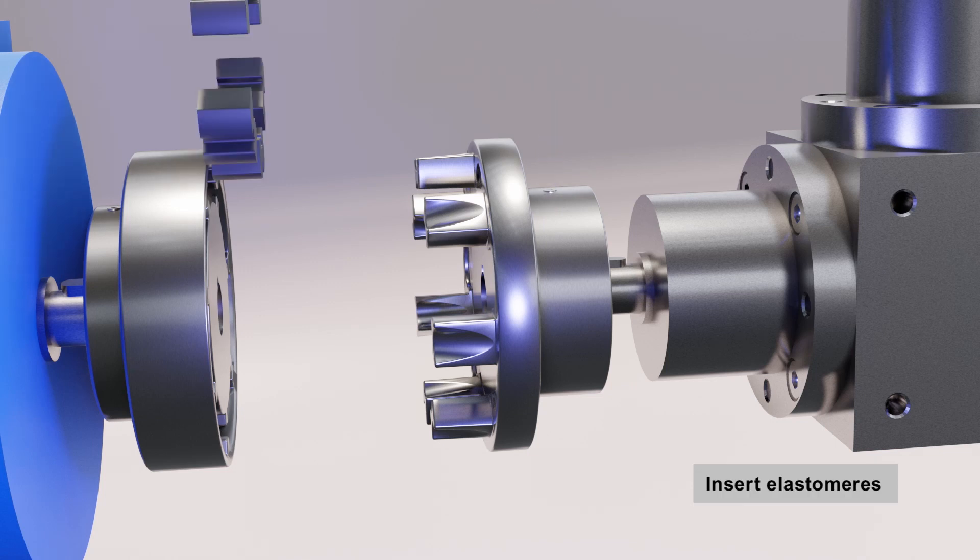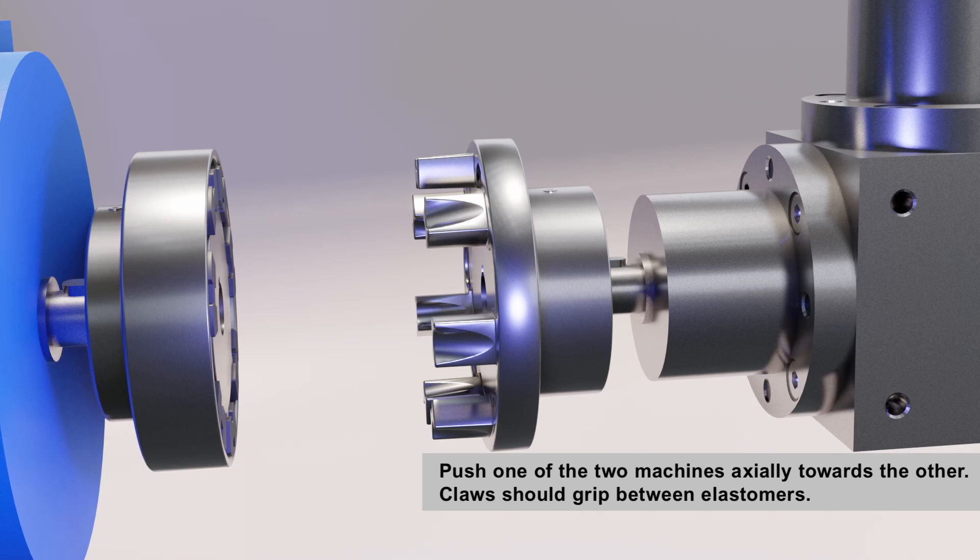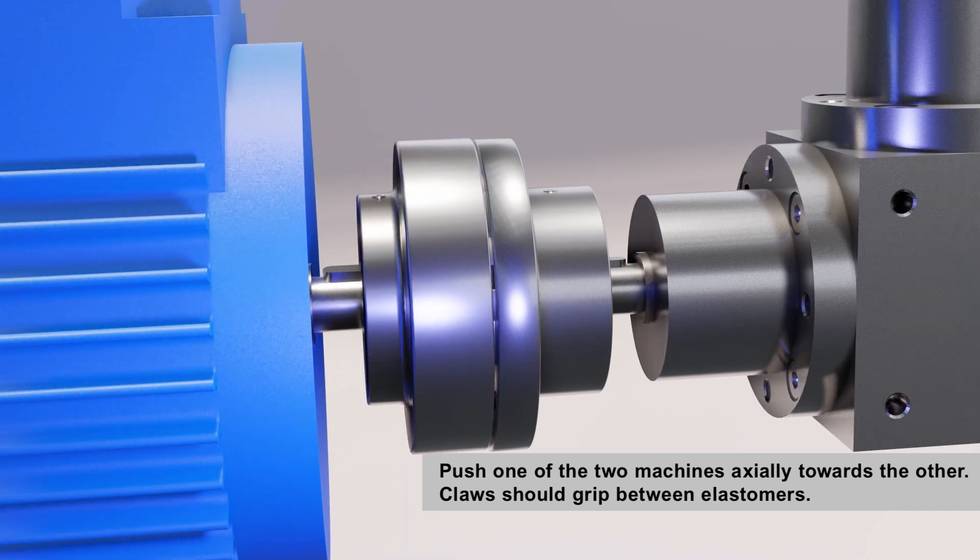If you have removed the elastomers in a previous step, insert them at this point. Now push one of the two machines axially towards the other. When aligning the claws, please ensure that they grip between the elastomers.